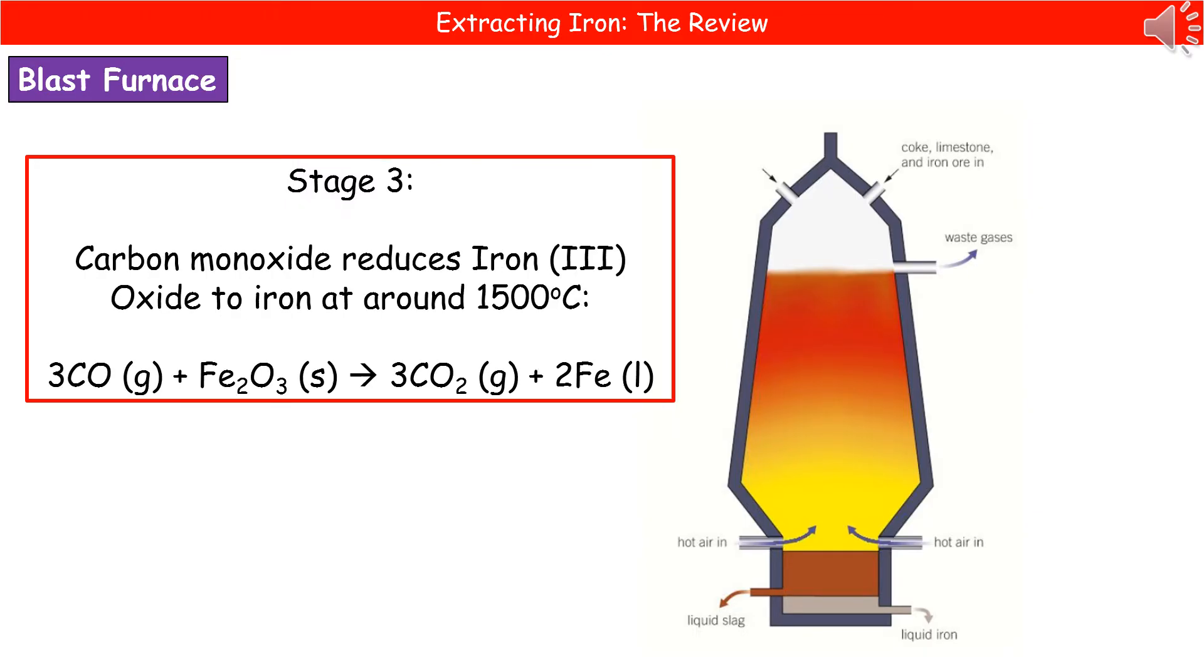The third stage is where the carbon monoxide then reduces our iron-3 oxide to iron. And this occurs at around one and a half thousand degrees Celsius, so a little bit warm.